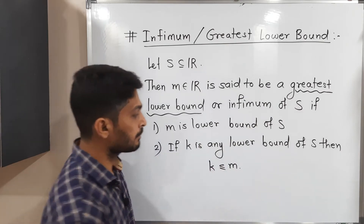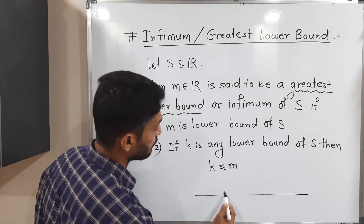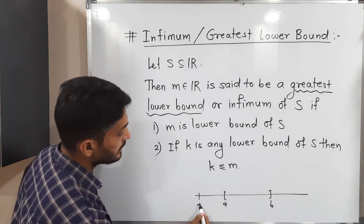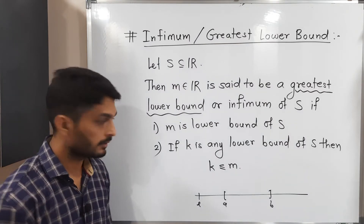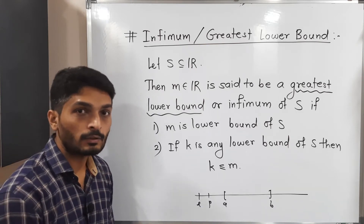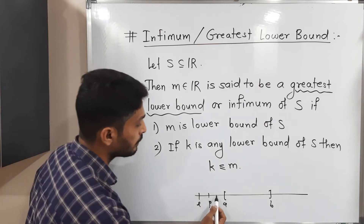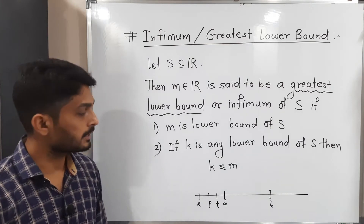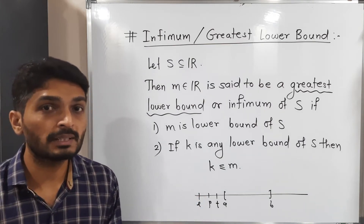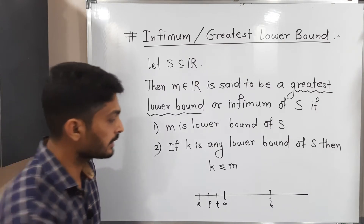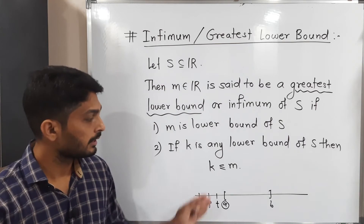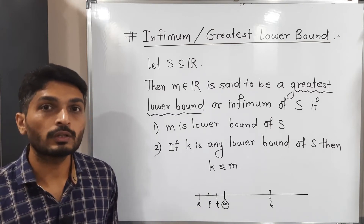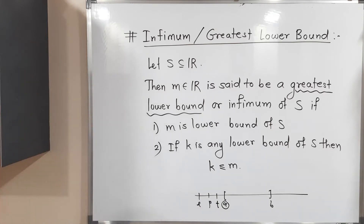For example, consider this real line with the closed interval [a, b]. We can say L is a lower bound of this set, and P is also a lower bound, but these are not the greatest lower bound since we can find a lower bound greater than these. T is also a lower bound but still not the greatest. The greatest lower bound or infimum of this set is a, since a is the largest lower bound.